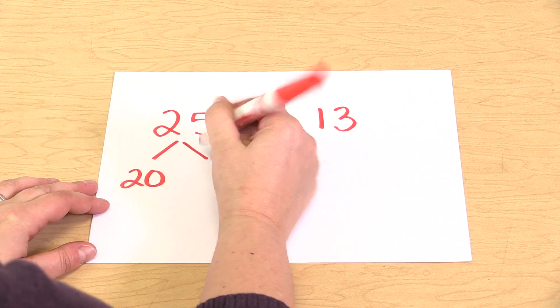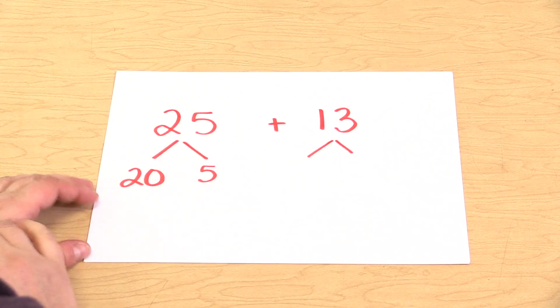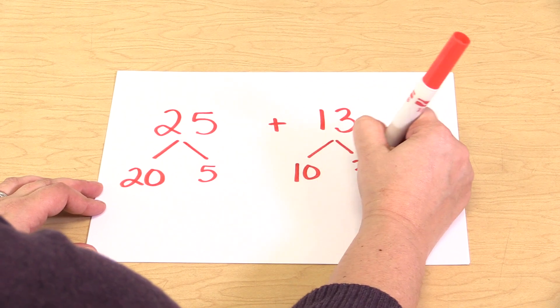And 13 would be broken up into 10 and three ones. The next thing we would have the students do is add together the tens.